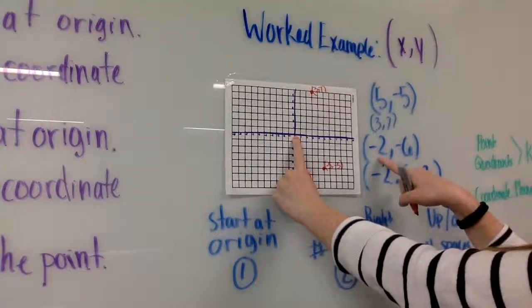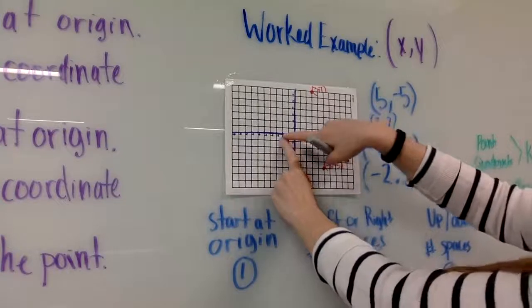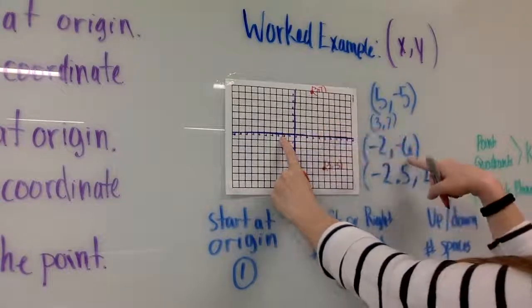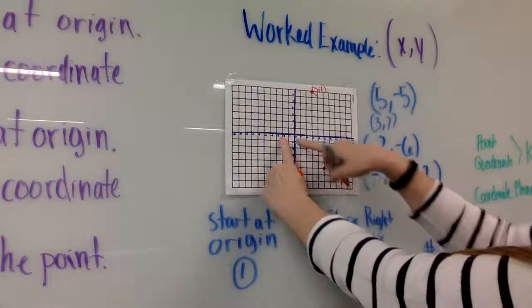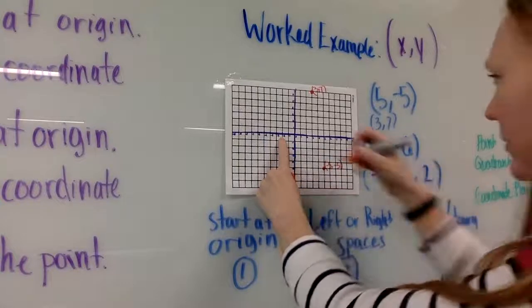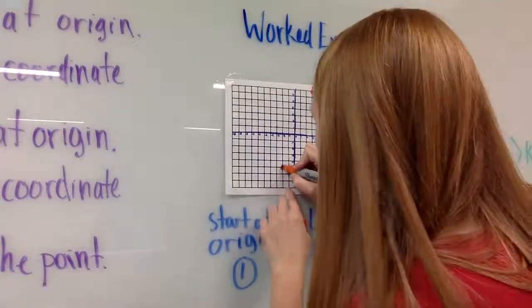My next ordered pair is (-6, -2). Starting at the origin, because the x coordinate is negative it goes to the left. My y coordinate is also negative so it goes down. I plot it at negative six, negative two.